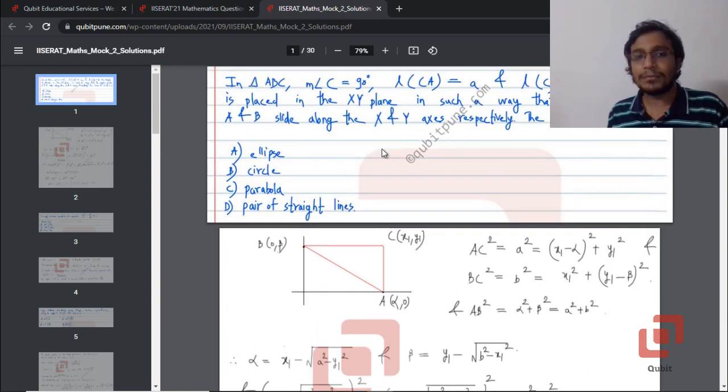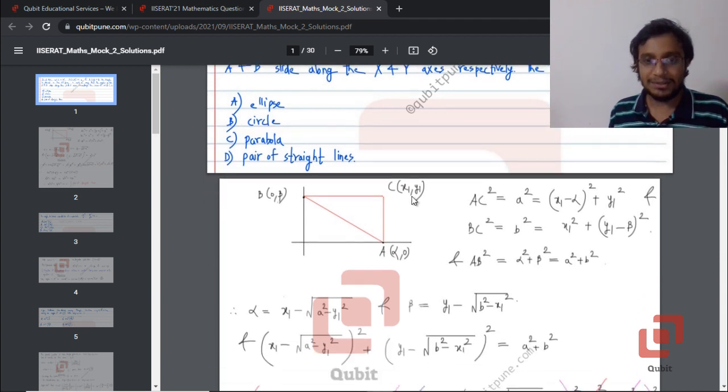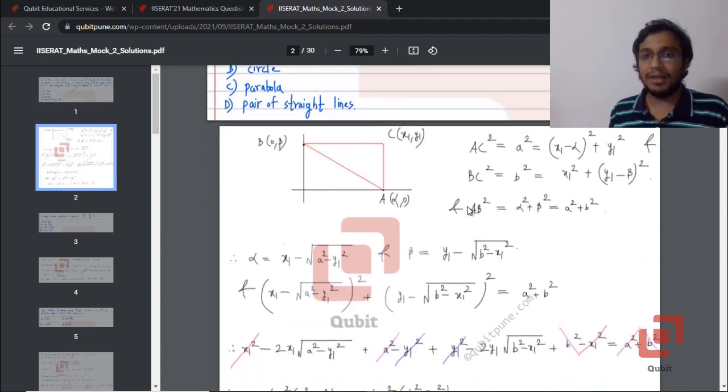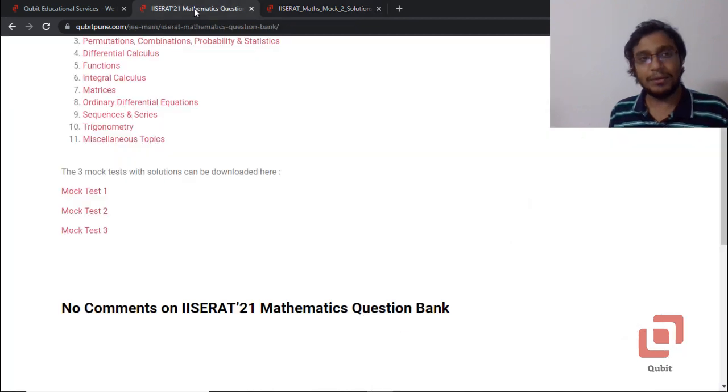For example, this is a question on 2D coordinate geometry, ellipse you can see that conic sections and its solutions can be accessed here. Similarly, you can do that for the other two mock tests.